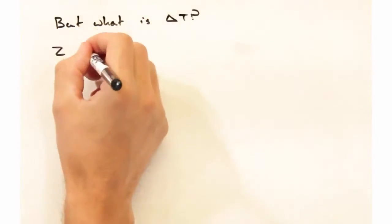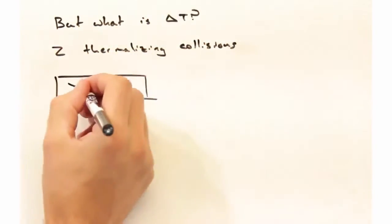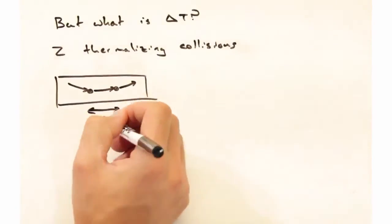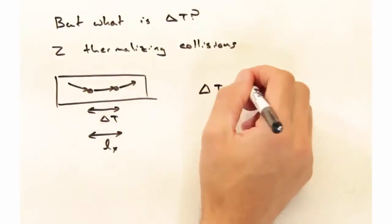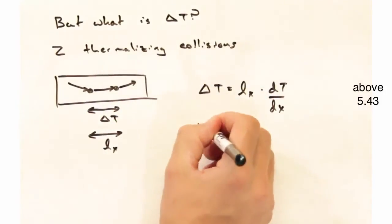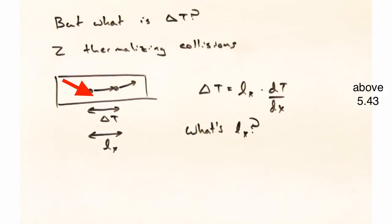This is all well and good, but we don't really have a sense of what this delta t is. So, we consider then two thermalizing collisions that are not at the same position in x in the sample. The particle comes in, thermalizes at t1, moves on to t2, re-thermalizes. So, between these two points, we can think of a delta t.